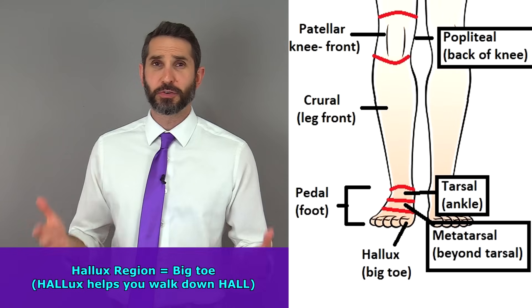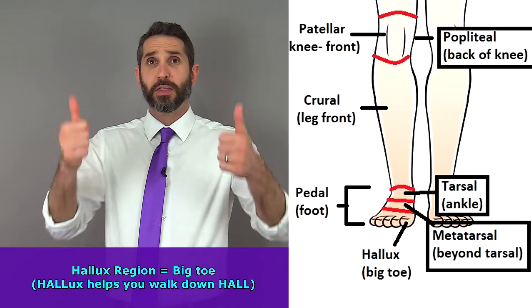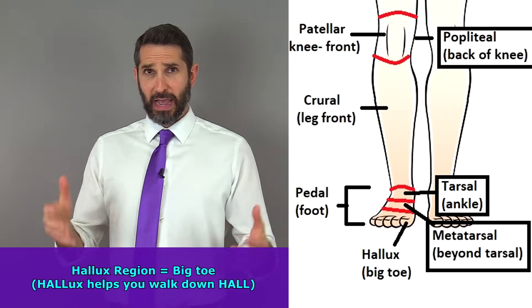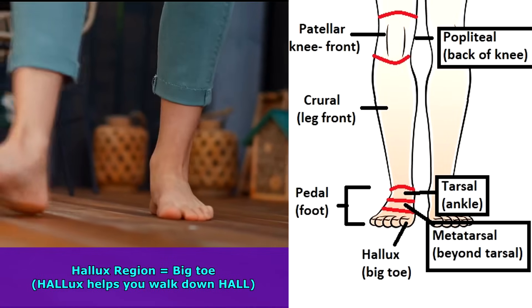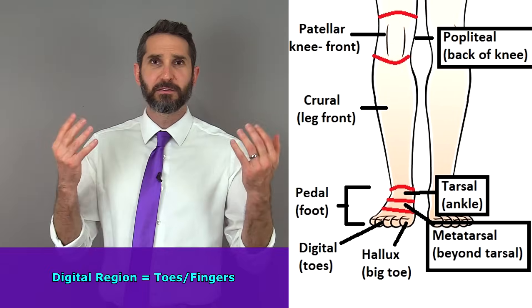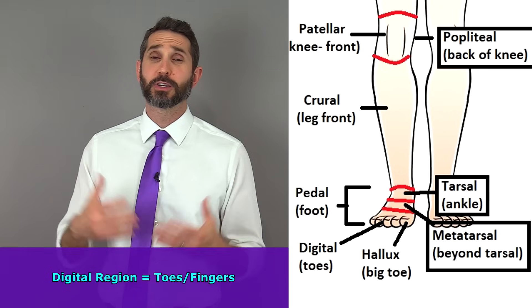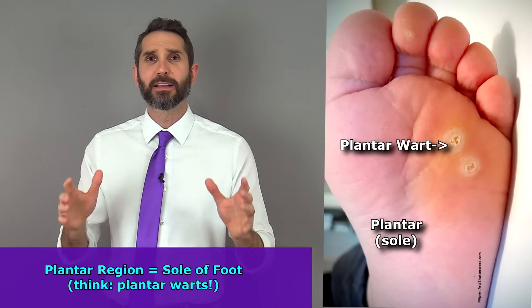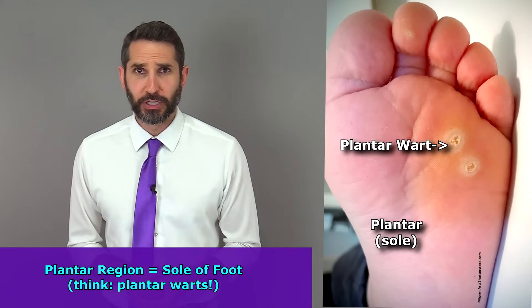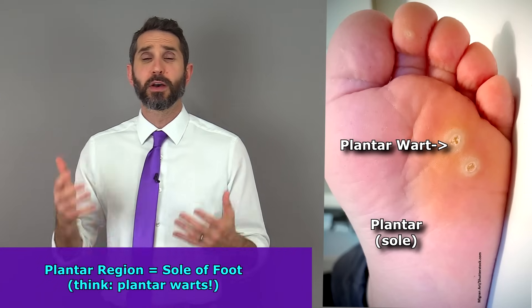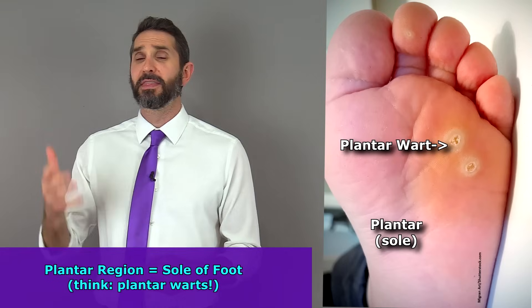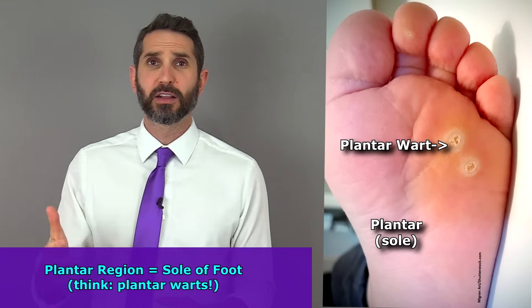The hallux is just the region of your big toe — the pollux was the thumb, the hallux is the toe. You use your hallux to walk down the hall. Just like the fingers, the toes are also referred to as your digital region. Finally, the plantar region is the region of the sole of the foot — if you've ever had a plantar wart, that's where it'll be located. They're ugly, they're nasty, you don't want one.